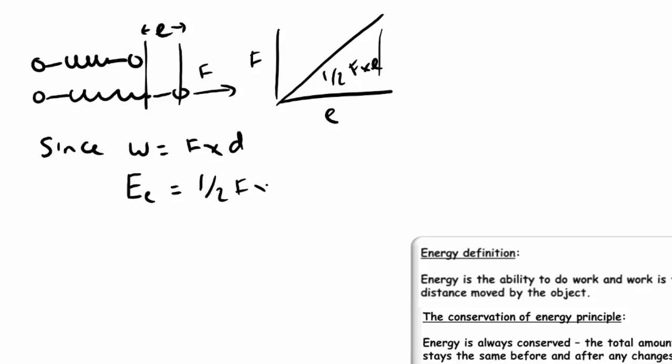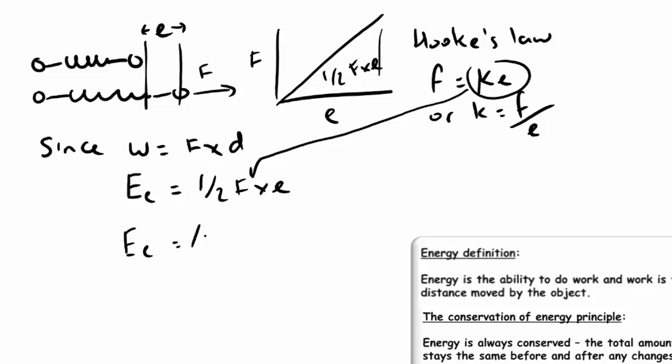But, since Hooke's law is also force equals spring constant times extension, we can sub in, I'm just rearranging it here, k = f over e, which is the gradient of that graph as well. We can sub into the equation for elastic strain energy the formula for force, which is ke. So, we get a half ke times e, which, again, simplifies down to a half ke squared.